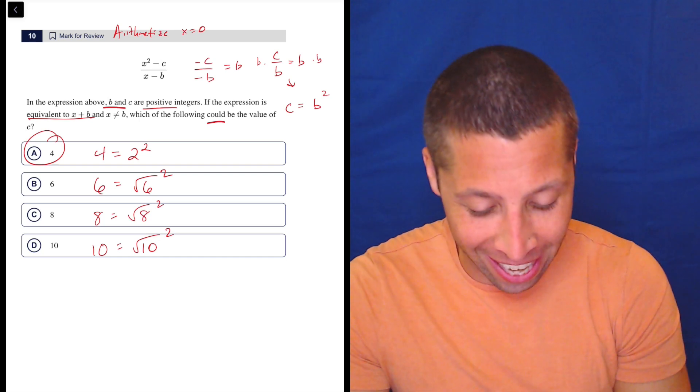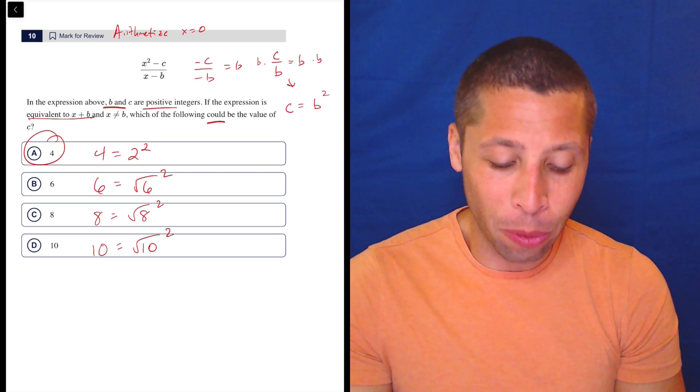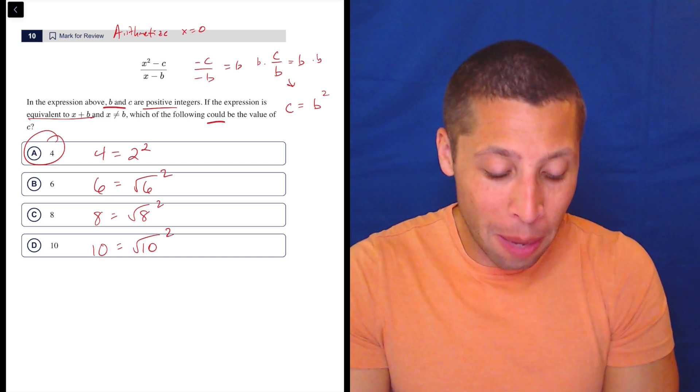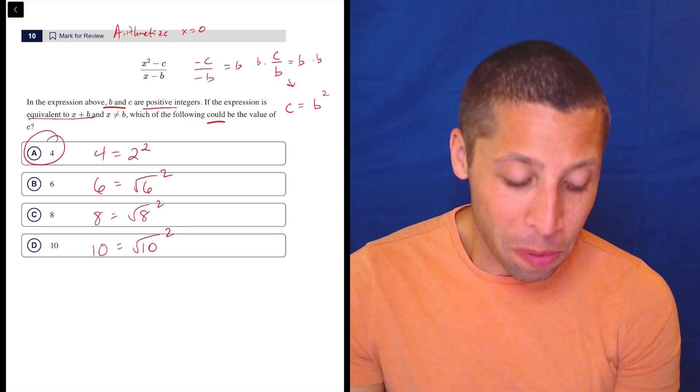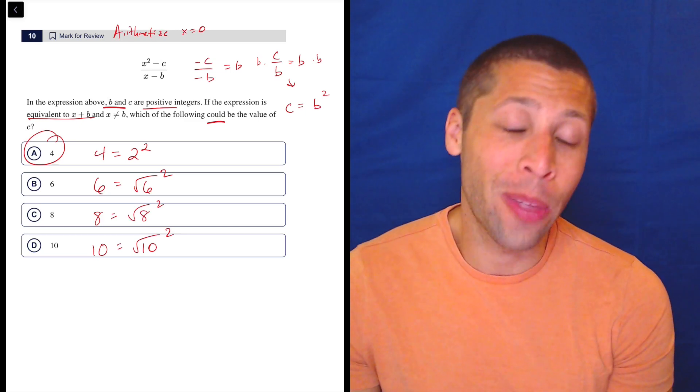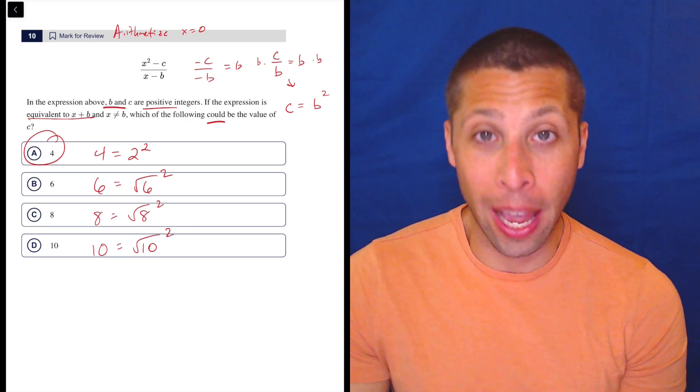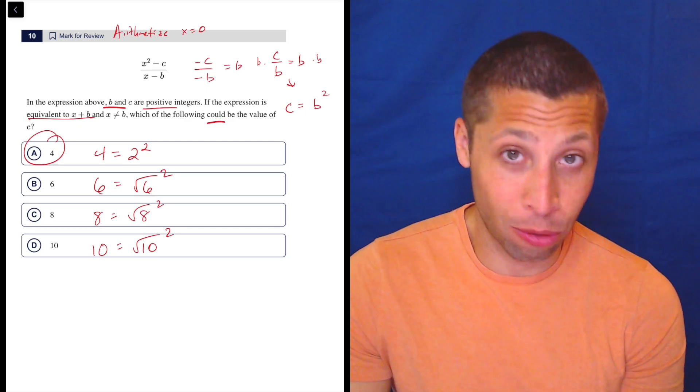But there you go. That's what I'm seeing it as. So the six equals the radical six squared, that is true. But in that case, for choice B, the letter B would be a messy number. So that doesn't work.